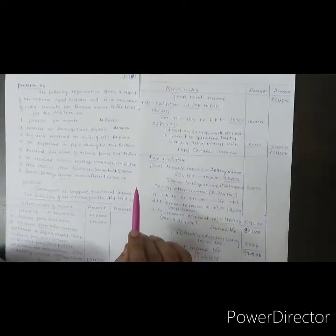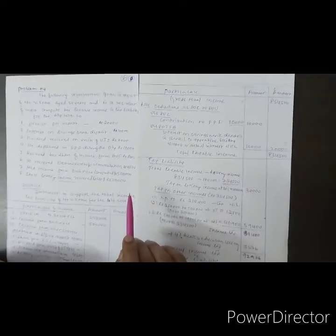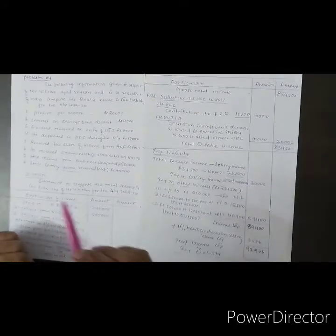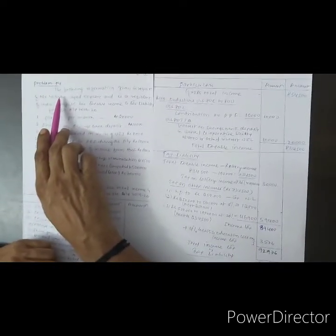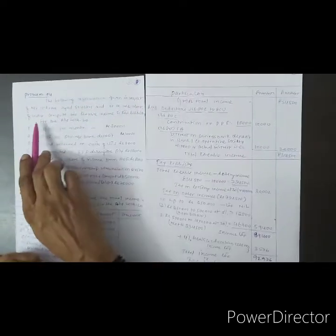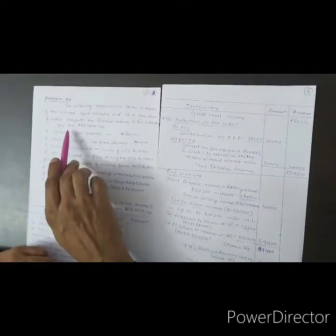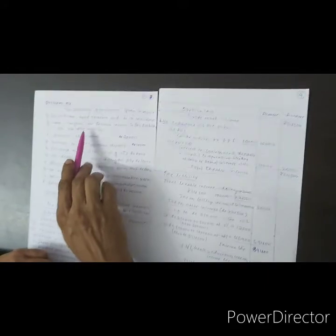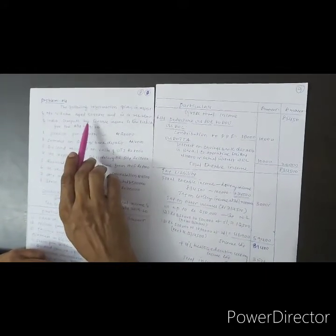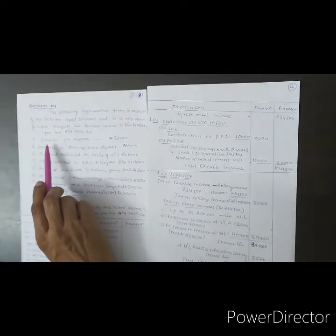Dear students, today's problem number 4 is on tax liability. Let's review the problem and go through it. The following information is given in respect of Mr. Vikram, aged 50 years, who is a resident of India. We need to compute his taxable income and tax liability for the assessment year 2020-21. The age of 50 years means he is an individual below 60 years, under the normal individual category.